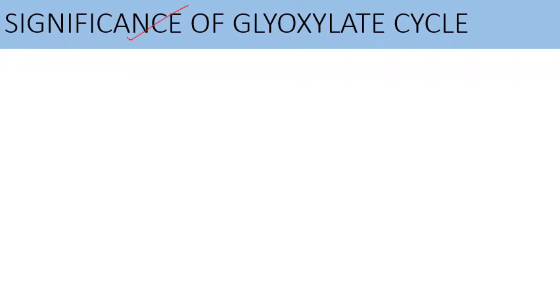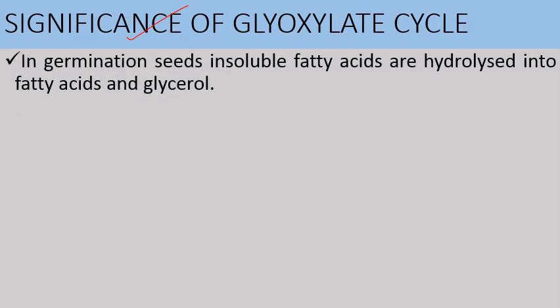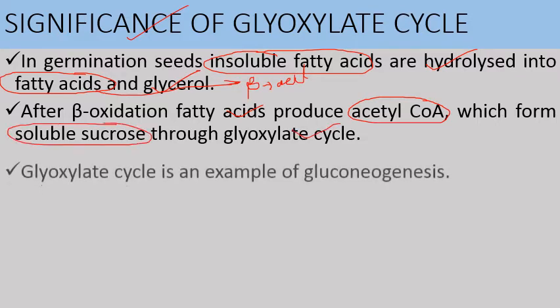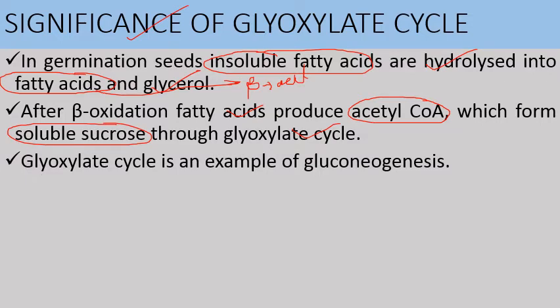The most important significance of the glyoxylate cycle occurs in germinating seeds. In germinating seeds, insoluble fats are hydrolyzed into fatty acids and glycerol, and the fatty acids undergo beta-oxidation to form acetyl coenzyme A. This acetyl coenzyme A then forms soluble sugars through the glyoxylate cycle. Therefore the glyoxylate cycle is an example of gluconeogenesis — the synthesis of glucose from sources other than photosynthesis.